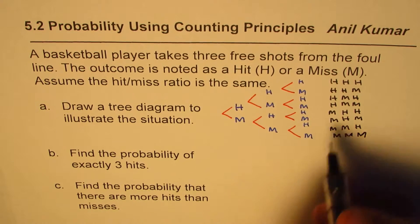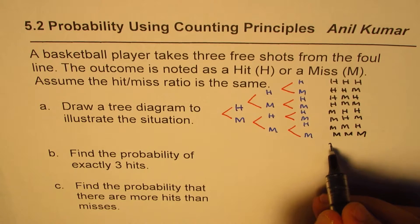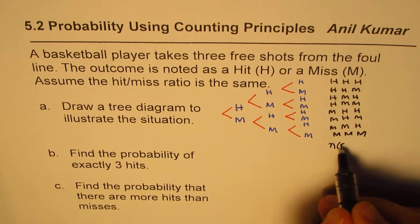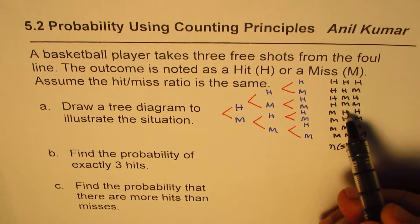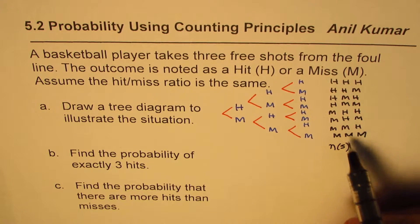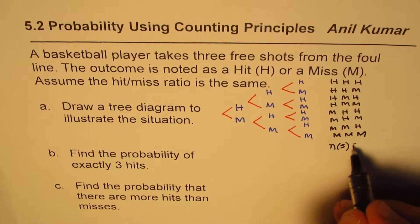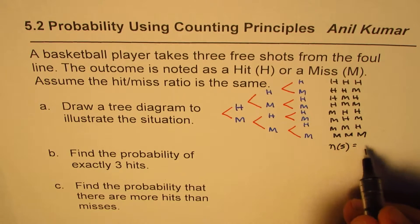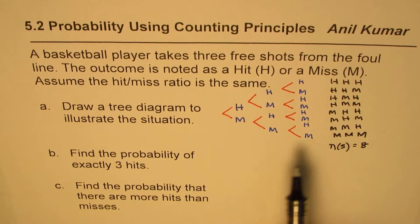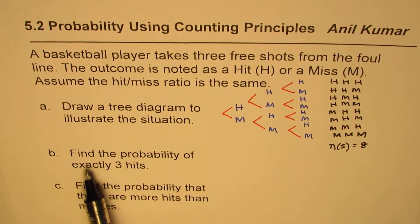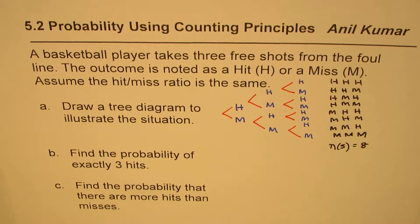So these are all the possible outcomes. The sample space is eight — that is 2 to the power of 3, since there are three trials each with two outcomes. Using counting principles, 2³ = 8.